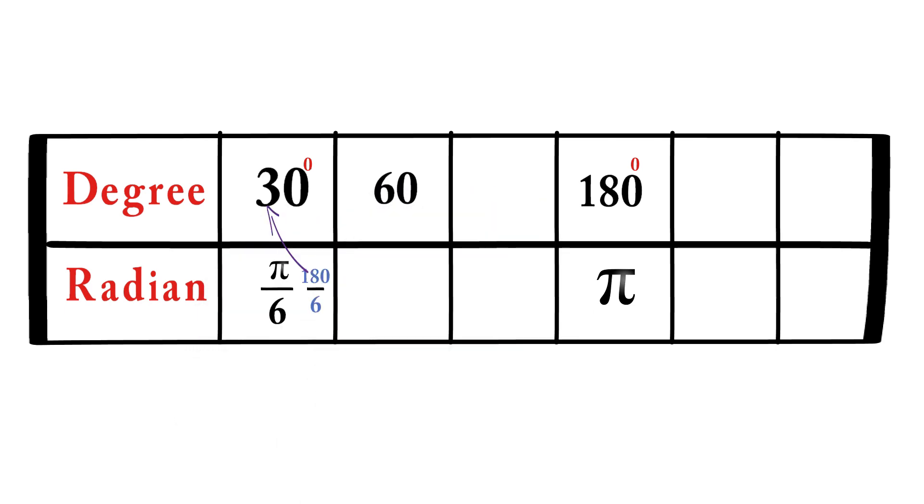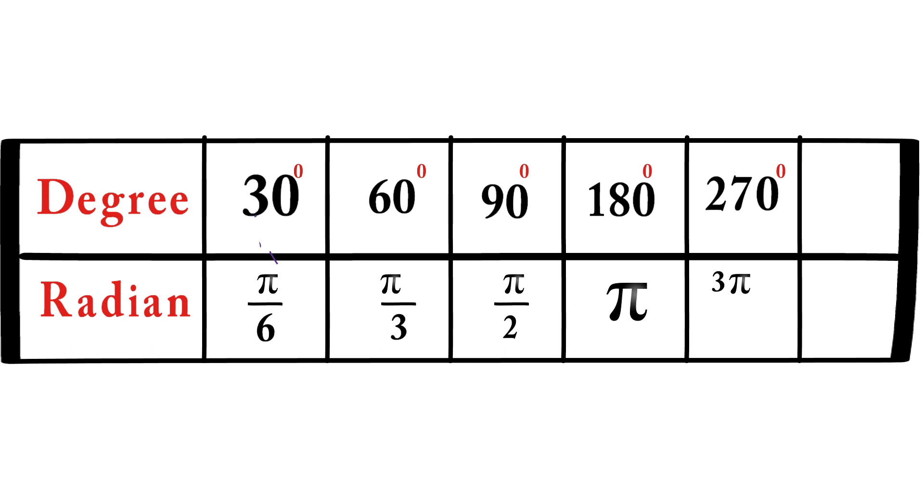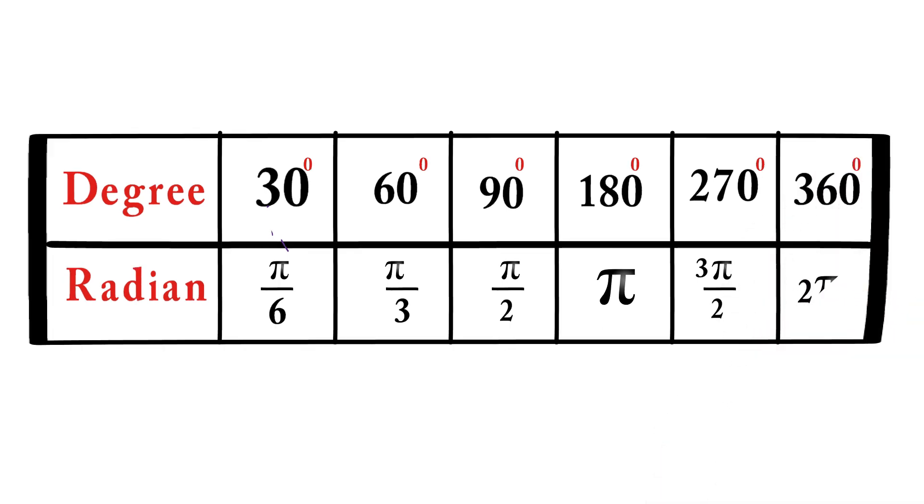Similarly, 60 degree is π/3, 90 degree is π/2, 270 degree is 3π/2, and 360 degree is 2π.